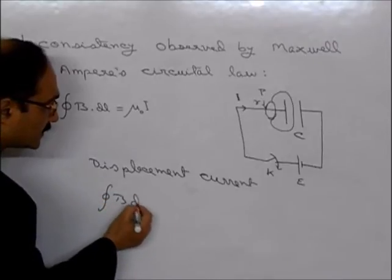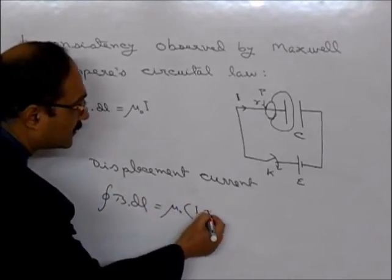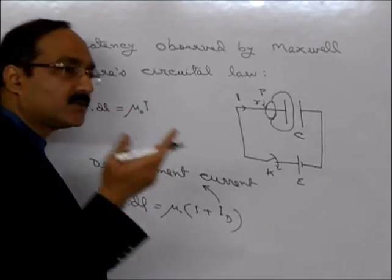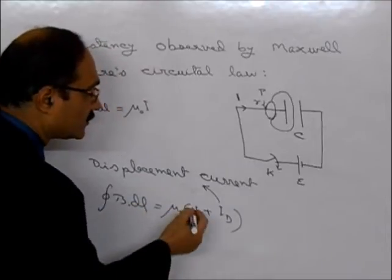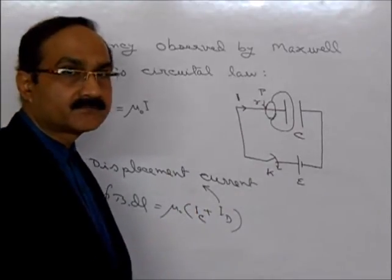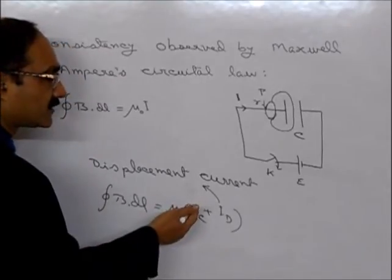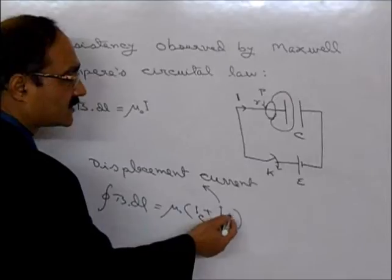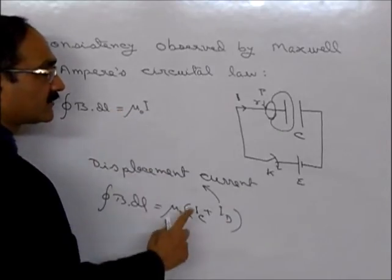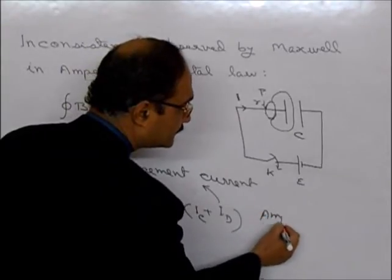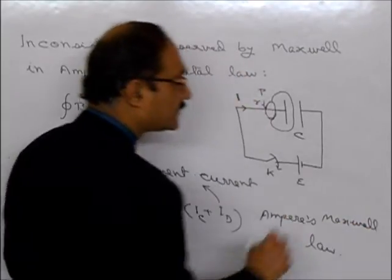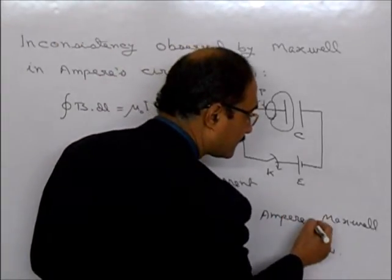He said the law should be: the closed integral of B dot dl equals mu naught times (Ic plus Id), where Id is the displacement current and Ic is the conventional conduction current — so called because current through the conductor is due to conduction of electrons. This modified equation is called the Ampere-Maxwell law.